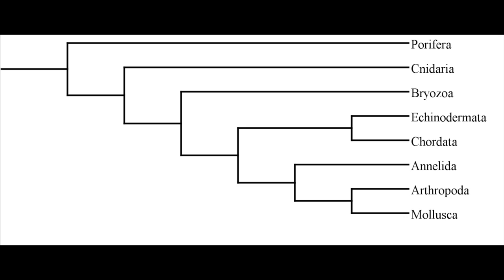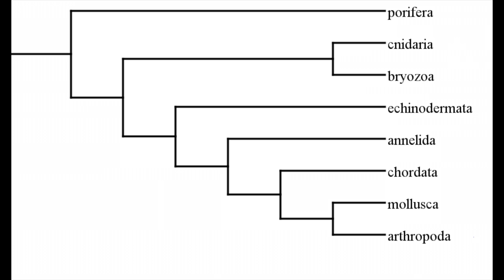These are the phylogenetic trees made in lab. Cnidaria is the closest relative to the Bryozoa according to the phylogenetic trees. These two trees differ because the characteristics are similar with the circulatory system, digestive system, and tissue layers. They differ with the body cavities.